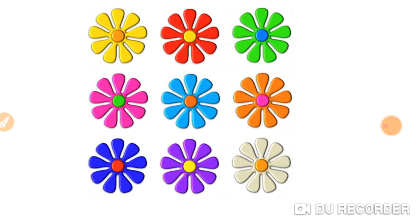Now, look at this picture. Goinkans, let's count how many flowers are given. Are you ready to count flowers? Come on, let's get started: 1, 2, 3, 4, 5, 6, 7, 8, 9. How many flowers are there? 9 flowers.